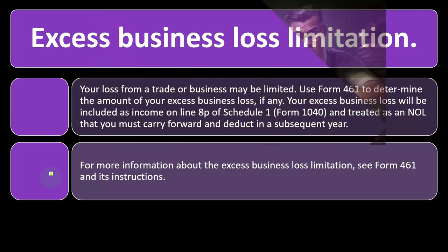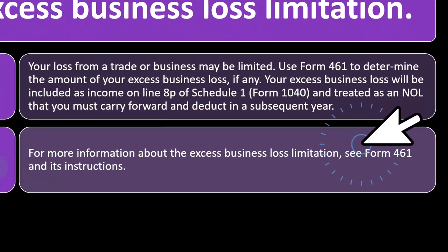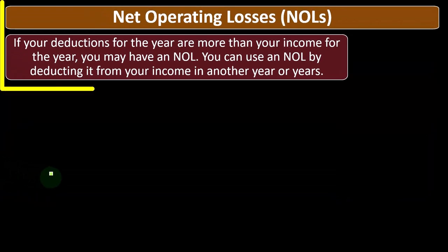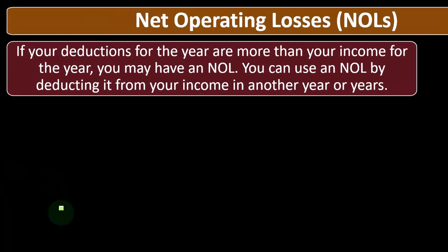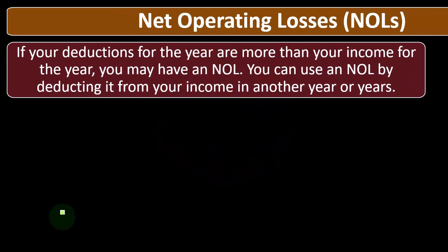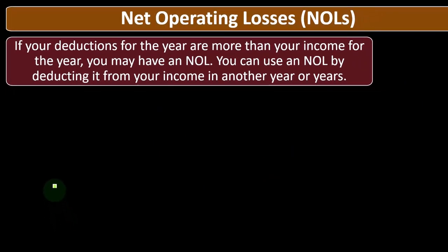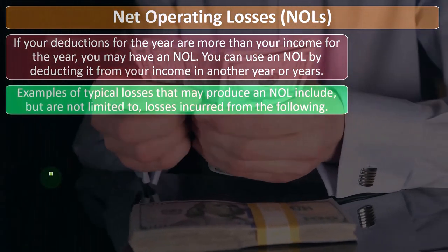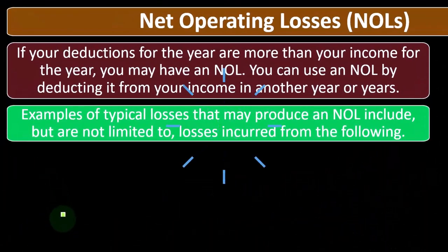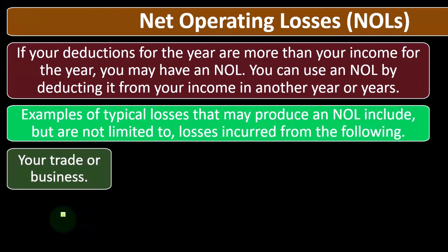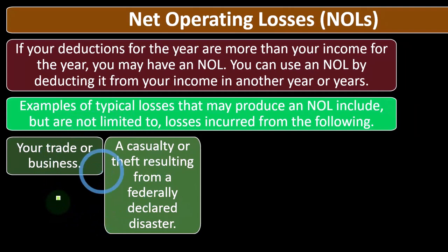For more information about the excess business loss limitation, see Form 461 and its instructions. Regarding net operating losses: if your deductions for the year are more than your income, you may have an NOL. You can use the NOL by deducting it from your income in another year or years. Examples of typical losses that may produce an NOL include your trade or business — that's our major focus here, the Schedule C — a casualty or theft resulting from a federally declared disaster, and moving expenses.